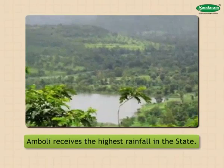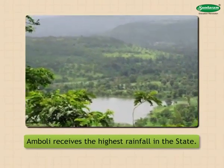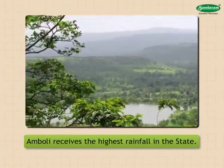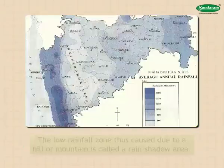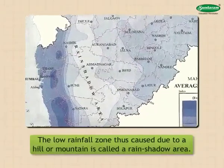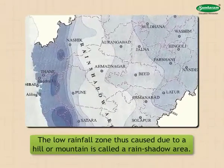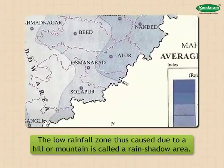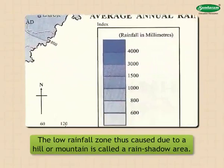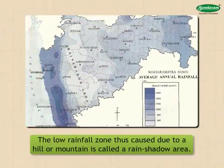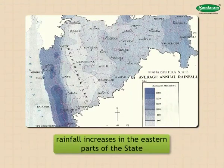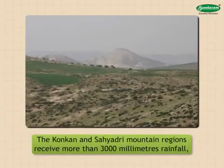After crossing the Sahyadri mountain top and moving eastward, these winds descend to a lower height. As the temperature at lower altitude is high, the temperature of these winds also increases. As a result, they can hold more moisture, leading to a lowering of rainfall to the east of the Sahyadri mountains. The low rainfall zone caused due to a hill or mountain is called a rain shadow area.